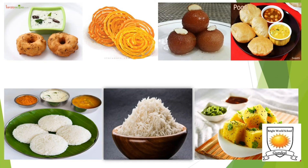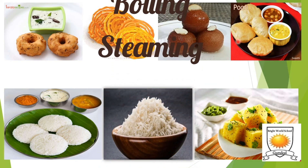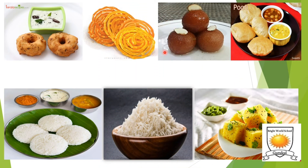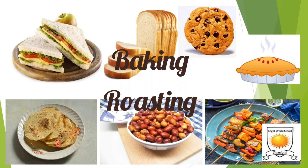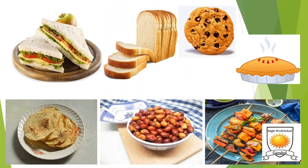Here we have seen different examples of different methods of cooking. Vada, jalebi, gulab jamun, and puri are a few examples of fried foods. Rice is an example of boiled food. Idli and dhokla are examples of steamed food. Bread, cookies, and pies are examples of baked food. Roasted papad, roasted peanuts, and paneer tikka are examples of roasted food.